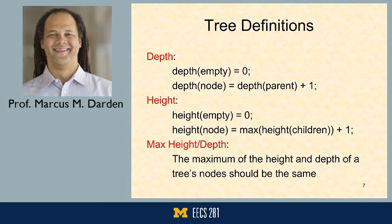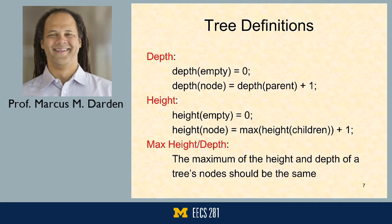Depth and height are metrics for how the tree is sized — both are recursive. Depth starts at the root and measures how far down you are. When the tree is empty, depth is zero; the depth of a node in a non-empty tree is the depth of its parent plus one. Height is measured from the bottom up; height of any node is the maximum height of all its children plus one, with height zero for an empty tree.